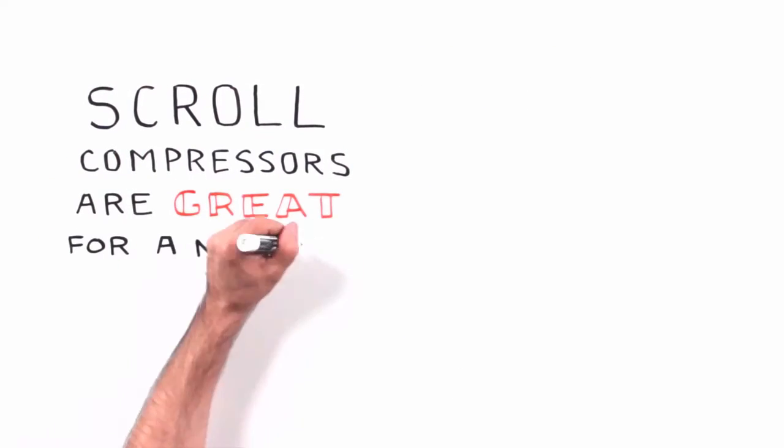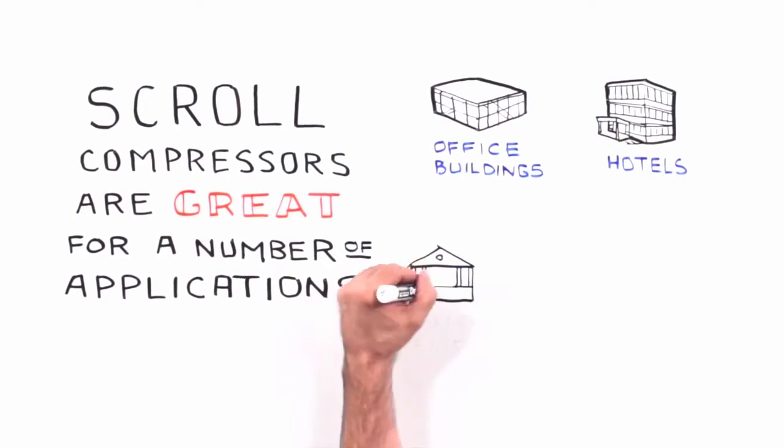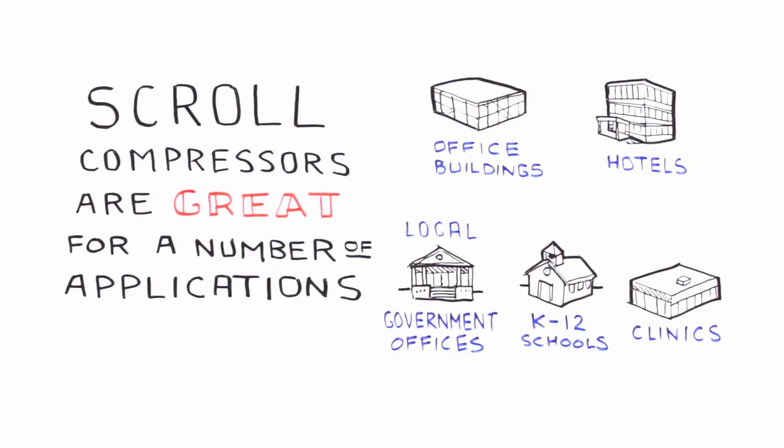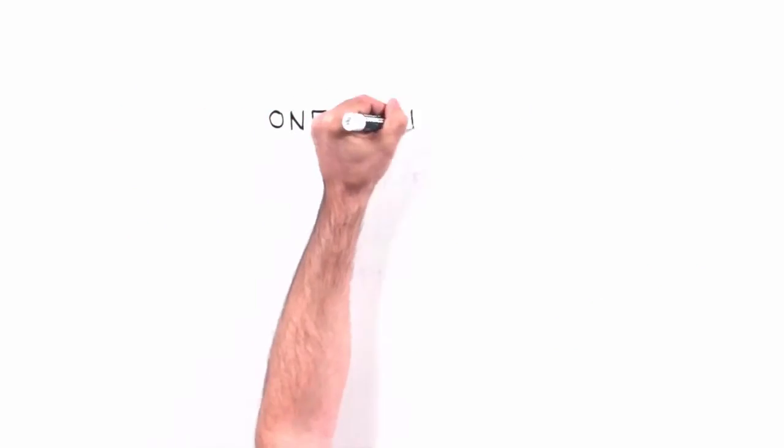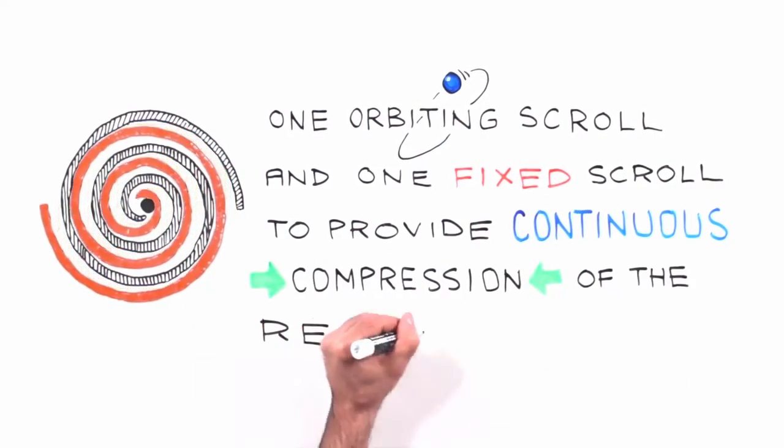Scroll compressors are great for a number of applications such as office buildings, hotels, local government offices, K-12 schools and clinics. These compressors have one orbiting and one fixed scroll to provide continuous compression of the refrigerant.